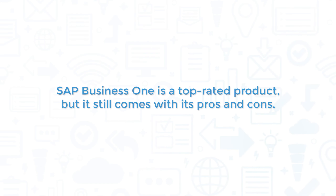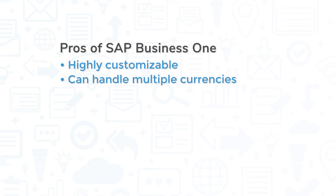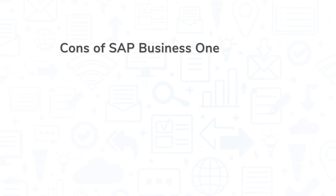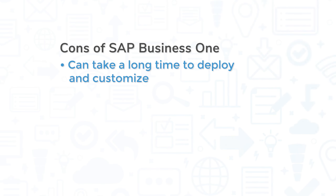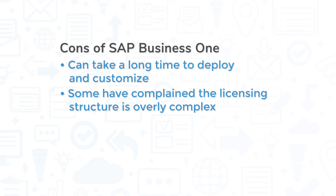SAP Business One is a top-rated product, but it still comes with its pros and cons. The biggest pro of SAP Business One might be how customizable it is. You get a lot of flexibility and depth with this system that you don't always find in small business solutions. Additionally, this system can handle multiple currencies, and since it's built on the SAP HANA database, you get access to powerful business intelligence tools that you would otherwise find in mid-market to enterprise solutions from other vendors. That being said, with a lot of room for customization comes a lot of time for deployment and configuration. And while many users agree the pricing is reasonable, some users have complained that the licensing structure is overly complex.